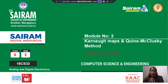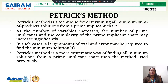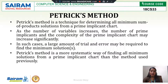Hello students. Now we are going to see Petrick's method from module 2. Petrick's method is a technique used to determine all the minimum sum of solutions for a prime implicant chart. This we have seen in QM method. We know what is prime implicant chart, what is selection of prime implicants, essential prime implicants. As the number of variables increases, the number of prime implicants and the complexity of the prime implicant chart also increases. In these situations, we can use Petrick's method. This method uses trial and error. Now we will solve one problem using Petrick's method.